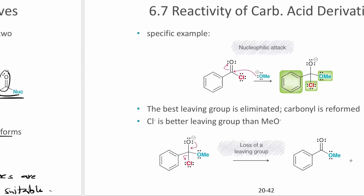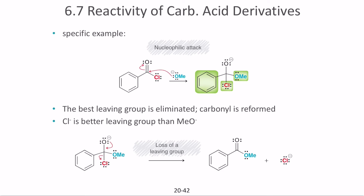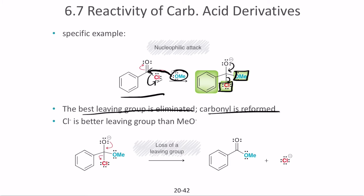For a specific example: benzoyl chloride reacts with a methoxy group acting as a nucleophile, which attacks the carbon. The chlorine takes its electrons and leaves forming the intermediate. When the oxygen donates its electrons back, either methoxy or chlorine can leave — whichever is the better leaving group departs. Chlorine is a better leaving group than methoxy, so chlorine leaves as a negatively charged species and the carbonyl is reformed.